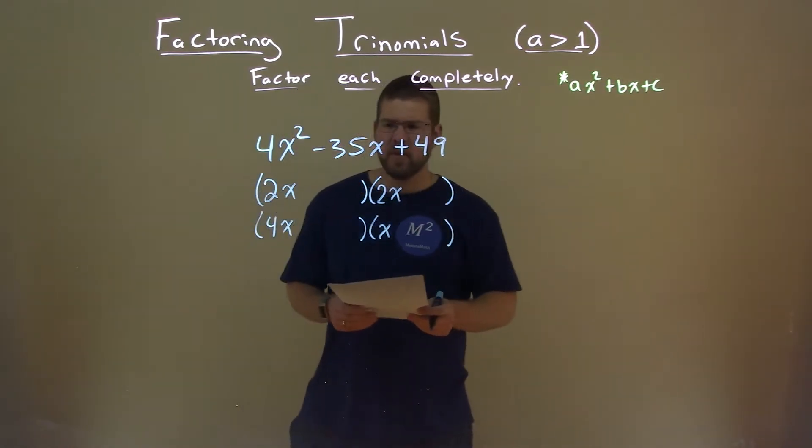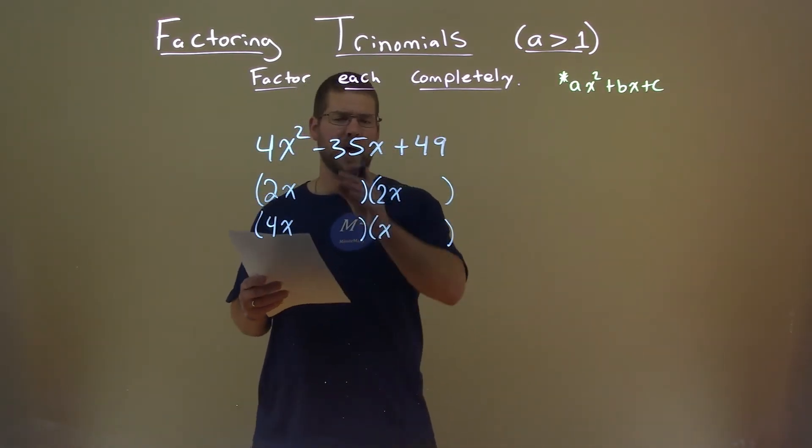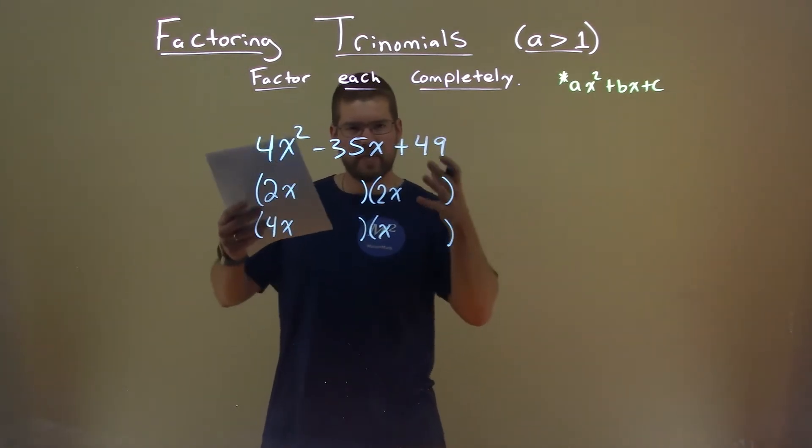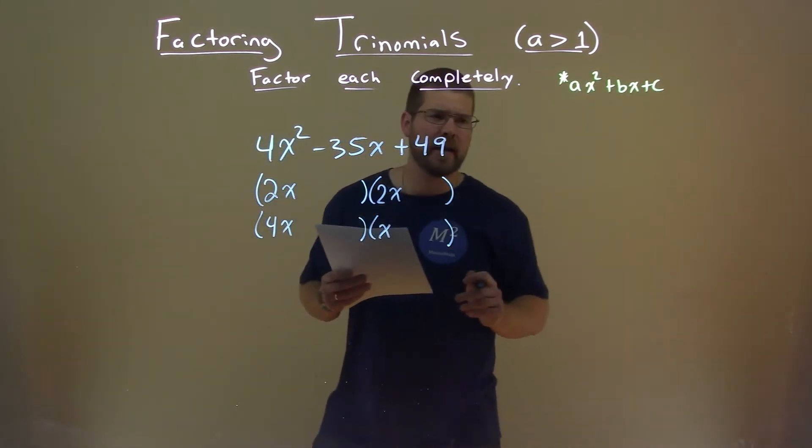All right, so where do we go from here? Well, we have our two base values that we're looking at, base setups. We look at 49, our c value.